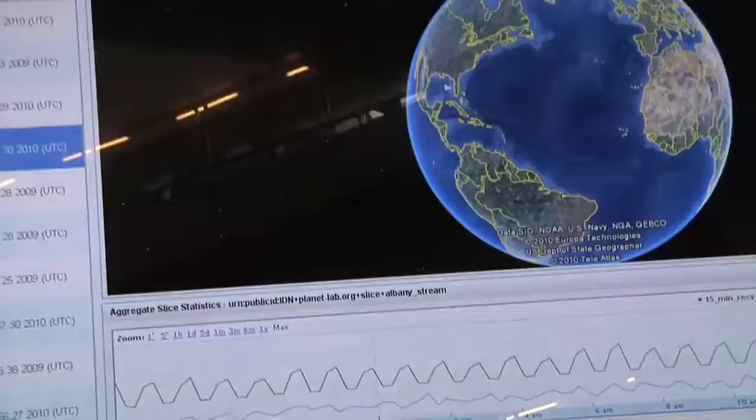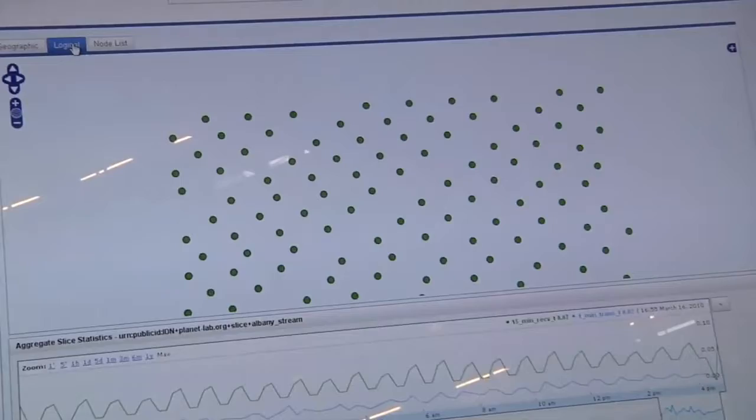In addition to the geographic representation, we do have a logical representation. Not too interesting on this slice because we don't have any connectivity between the nodes to show. So this is just an alternate view of that same data.